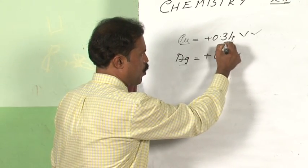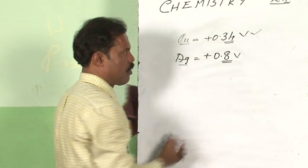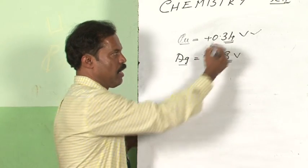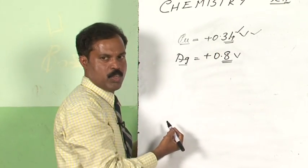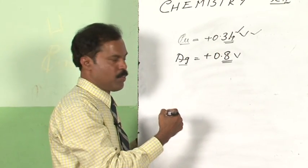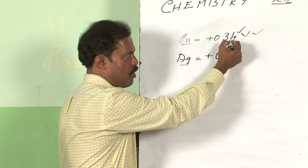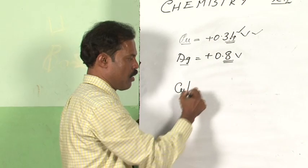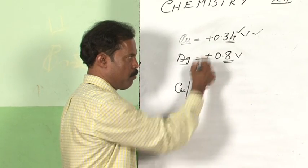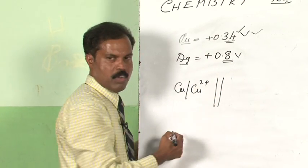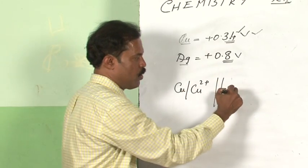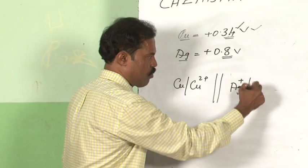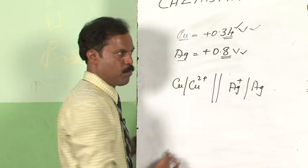Now, you can see the reduction potential of copper is less than that of silver. The one which has got less reduction potential should get oxidized, which means copper should be the oxidation half in a cell you set up between these two. Silver should be your reduction half, because silver has got more reduction potential.